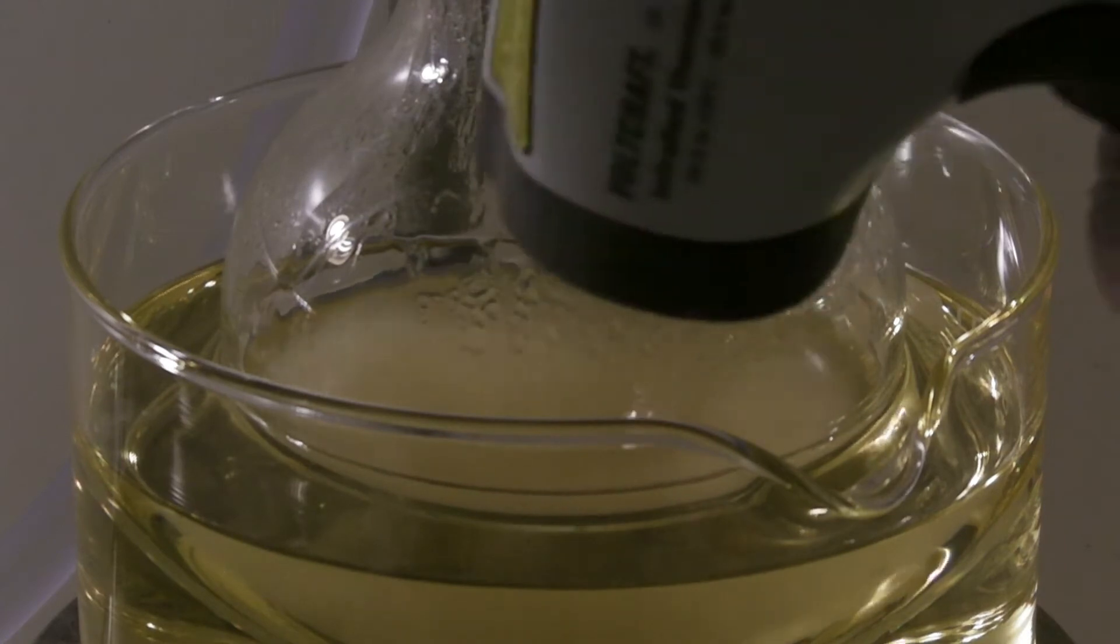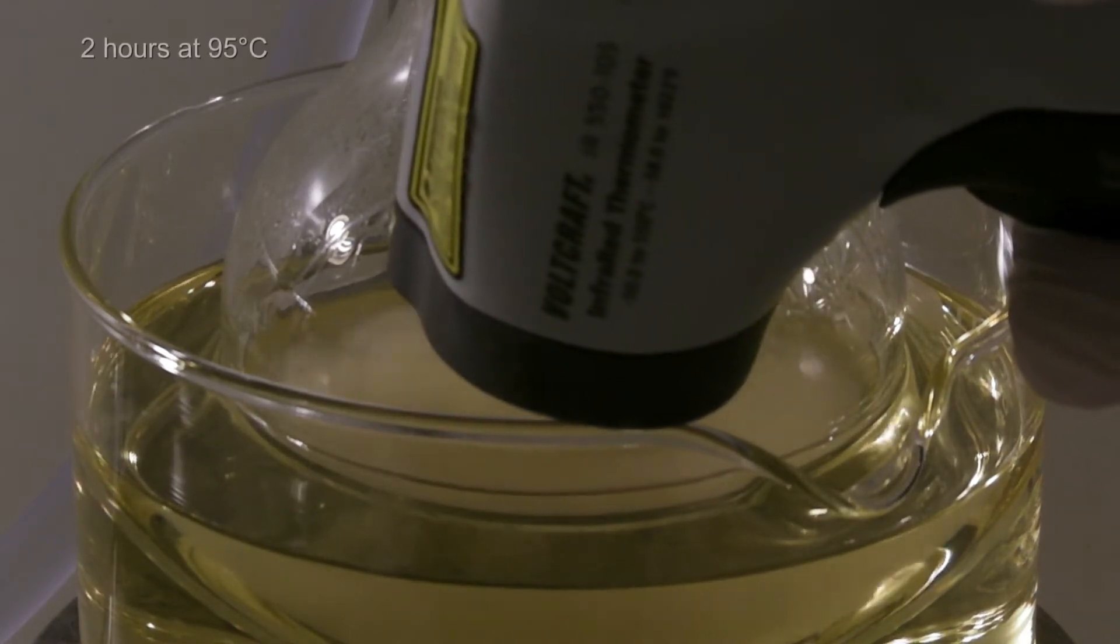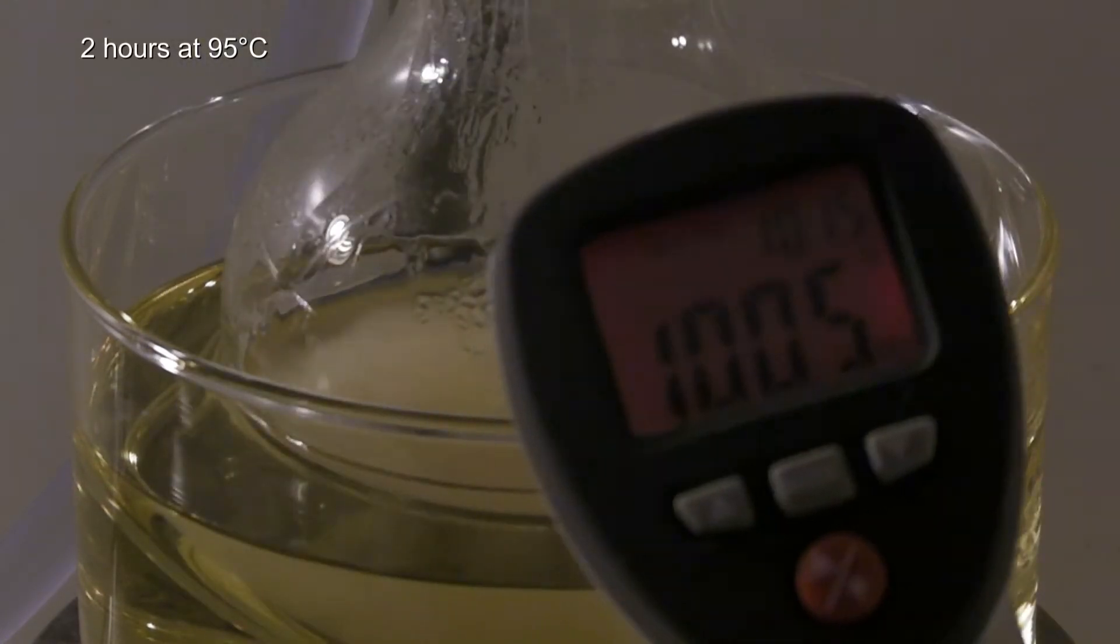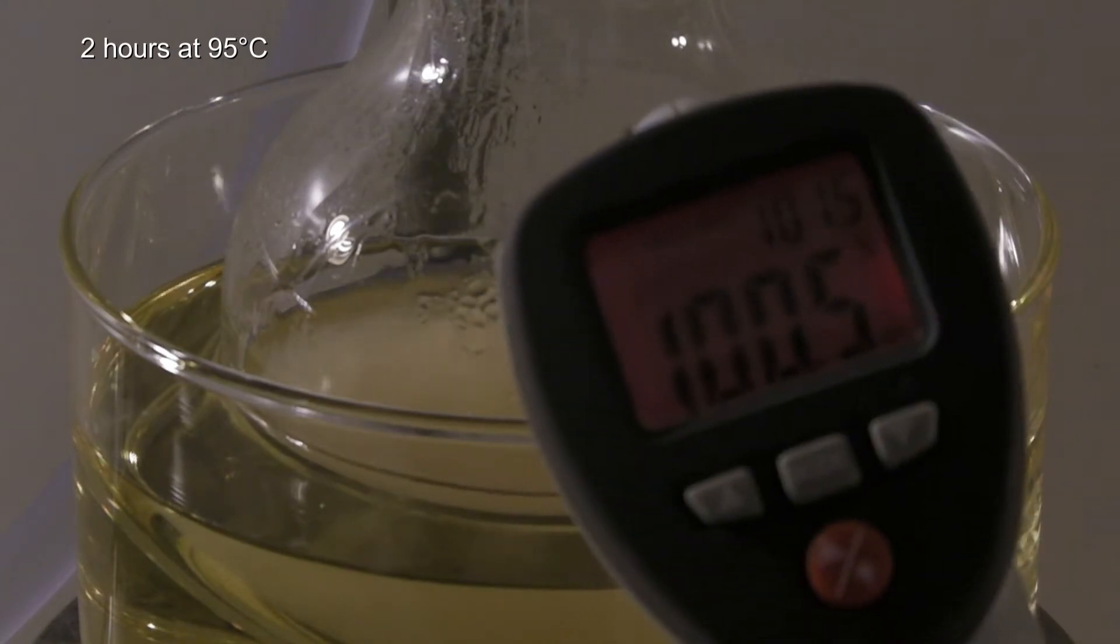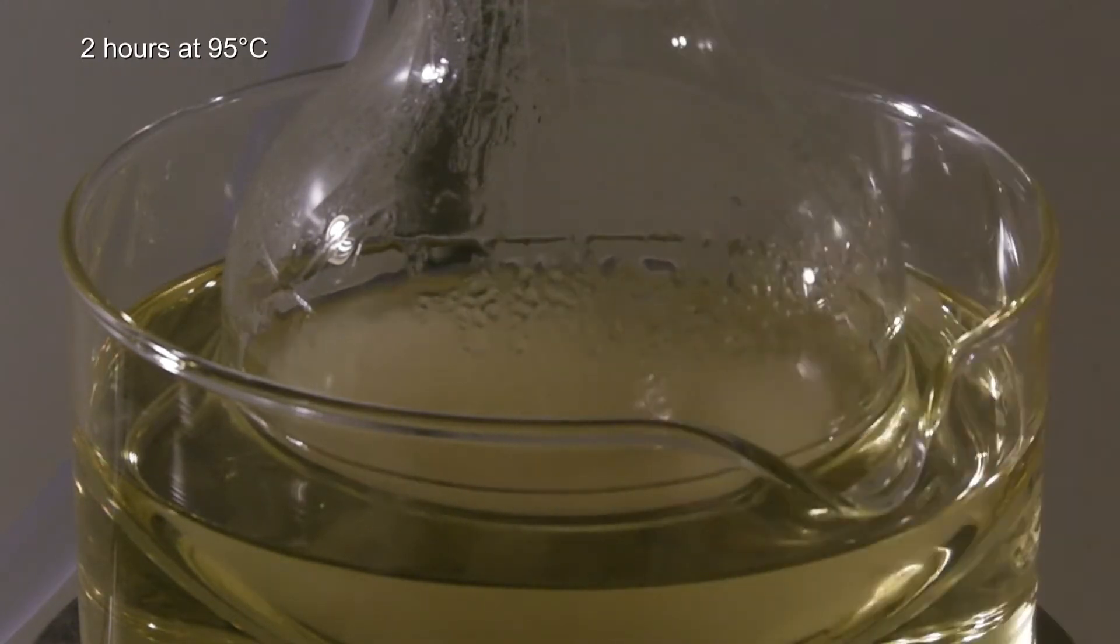The oil bath should be heated to 95 degrees C and the mixture had to be stirred for 2 hours. The stirring hot plate couldn't be set precisely to this temperature, so it was tried to keep it at least at 100 degrees C. By the end it did rise to 105 degrees C.